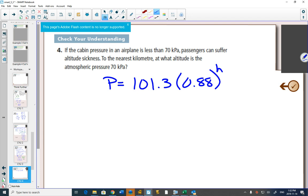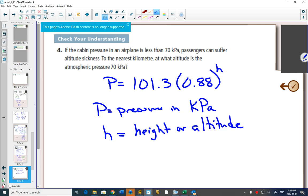Where P equals pressure in kPa, and H stands for the height or altitude.